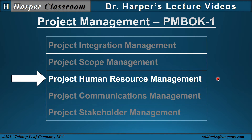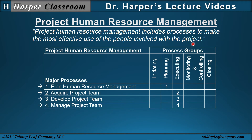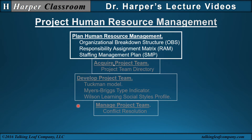Project human resource management includes processes to make the most effective use of the people involved with the project. In PMBOK, there are four processes and we'll look at portions of each. Plan human resource management: the organizational breakdown structure assigns responsibilities to different parts of the organization. The responsibility assignment matrix, or RAM, assigns responsibilities to individuals, including stakeholders and team members.